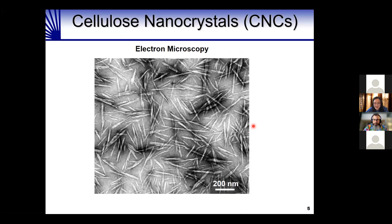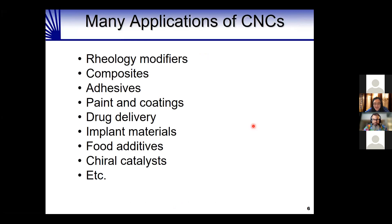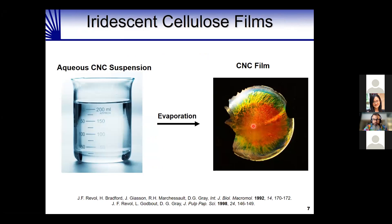Importantly, this process gives the nanocrystals surface sulfate ester groups that allow them to have a surface charge and form stable colloids in water. These are about 200 nanometers long — you'd have to put a thousand of them end to end to equal the width of a single human hair. These nanocrystals are very rigid and have been incorporated into implant materials, paints and coatings, adhesives, composite materials, food additives, and chiral catalysts.